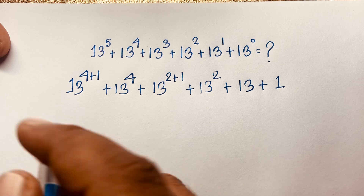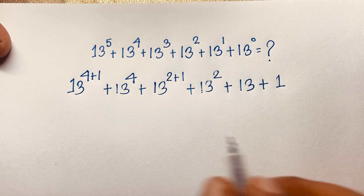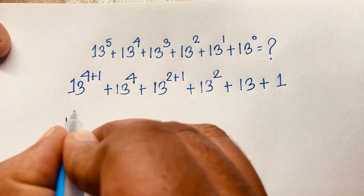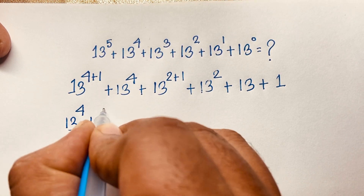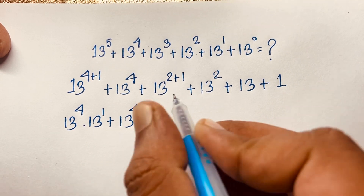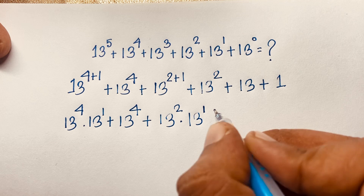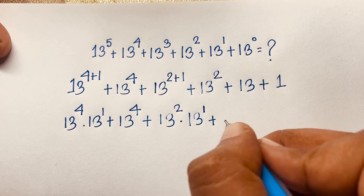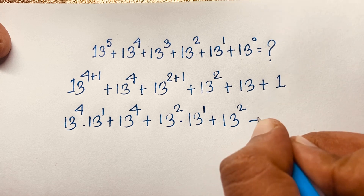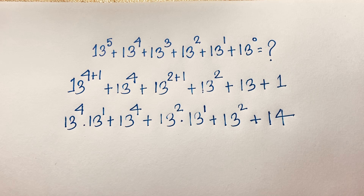Now you can see that 13 power 4 plus 1 — using the law that a to the power n plus m equals a to the power n times a to the power m — gives us 13 power 4 times 13 power 1. Similarly, 13 power 3 becomes 13 power 2 times 13 power 1. And we have 13 power 2 plus 13 plus 1, where 1 plus 13 equals 14.